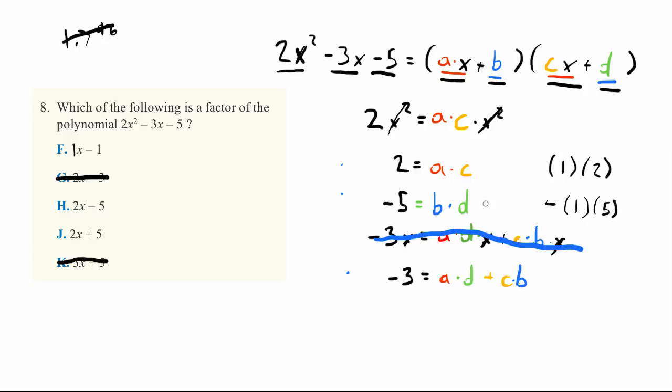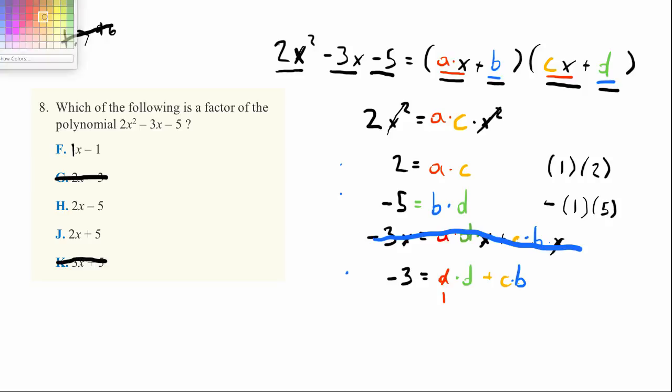So we know a or c, one of those is a 2 or a 1. So let's just go ahead and pretend as if a was a 1 off the bat. If a is a 1, then c would be a 2. It would have to be. And if we look at this, how are we going to get this equal to negative 3, given that d and b have to be, one of them has to be a 1 and one has to be a negative 5?